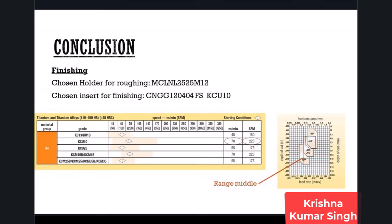For finishing, we use the FS geometry insert. Looking at the lower-middle portion of the geometry range, the suggested depth of cut is 0.4 mm or 0.016 inches. This means you must program the roughing operation to leave 0.4 mm of material for finishing. Every insert has a maximum depth of cut limit. On the other hand, very small depths of cut can cause tool wear because the insert rubs rather than cuts, reducing tool life. Always keep depth of cut in the manufacturer's suggested range.